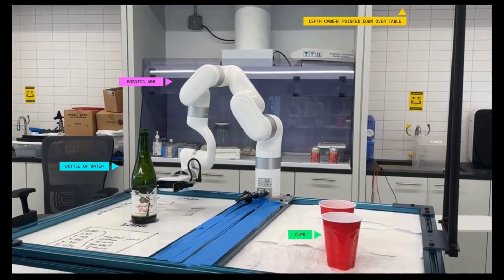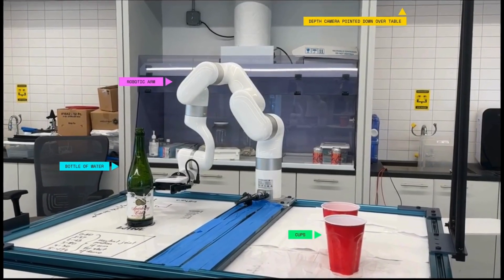VM's motion planning and camera vision allow the arm to adjust its position relative to the bottle and glass to achieve an accurate pour.